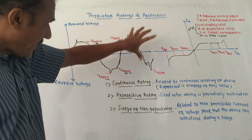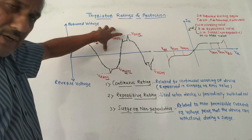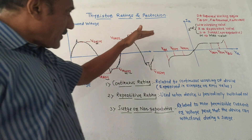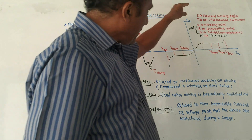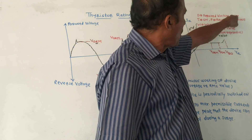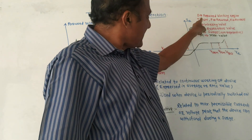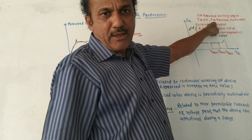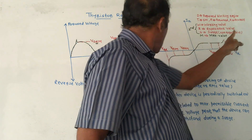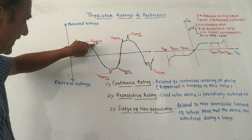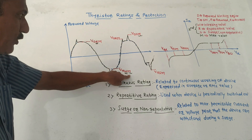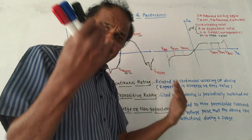Now we are going to study the different notations used in this diagram in detail. If notation D is there, it indicates forward blocking region. If notation T is there, it indicates on-state. F represents forward region, R represents reverse region. The first notation is VDRM, second is VDRW, then VRWM and so on.